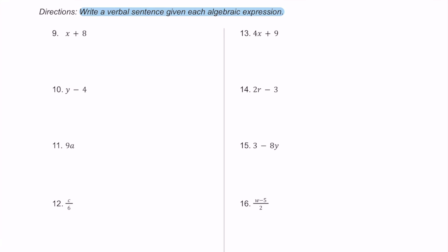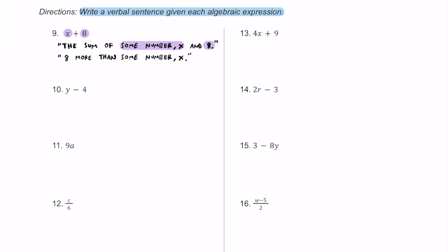For number nine, we have the expression x plus eight. We have two pieces: some number x and the number eight, with an addition sign between them. One verbal sentence we could write is: the sum of some number x and eight. Or we could say: eight more than some number x. A third option is: eight added to some number x.